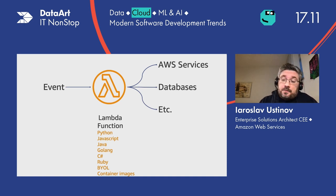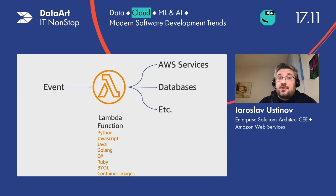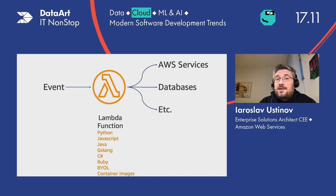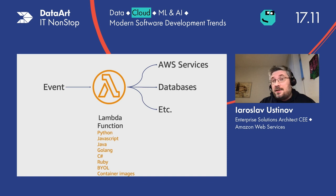Lambda is triggered by some kind of event. Essentially, an event is a JSON payload coming from somewhere. In response, Lambda runs your code and can deliver a response wherever you want — it might be another AWS service, it can put something to the database, or it's some third-party service. That's essentially what Lambda is about, and it was the first service which started the whole serverless story.